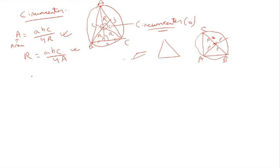Recall also from the sine rule: a/sin A = b/sin B = c/sin C = 2R. That capital R is this circumradius. So these sort of are the four major centers of the triangle — incenter, orthocenter, centroid, and circumcenter.